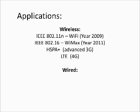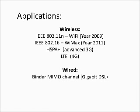Applications of MIMO technology in wired systems include Gigabit DSL, also known as the binder MIMO channel. It is a binder model for telephone lines based on multi-conductor transmission line theory using parameters from electromagnetic theory or measured data. Then we have G.9963, a home networking standard under development by ITU, which defines a power line communication system that uses MIMO technology to transmit multiple signals over multiple AC wires.